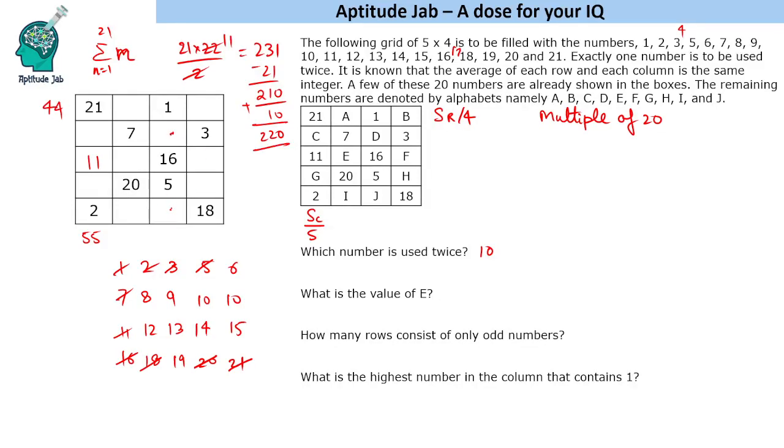Now D plus J is 33. How can you get 33 out of these numbers? The only possibility is 14 plus 19. Now if I put 14 here, let's say if I put 14 here, what will it become? This is 24.